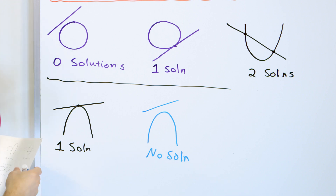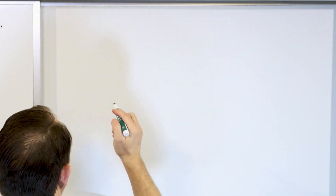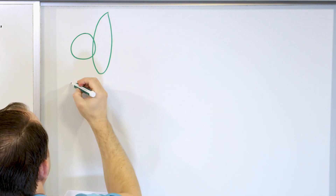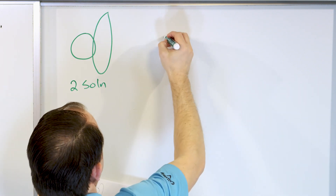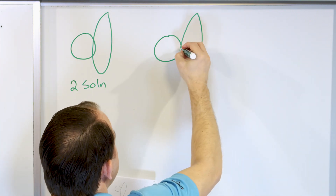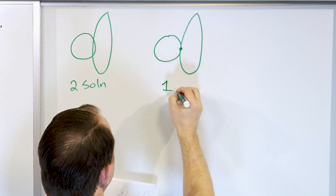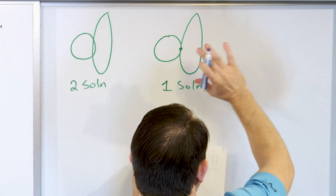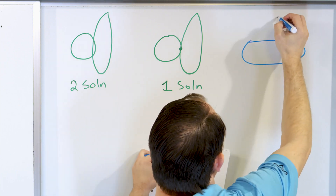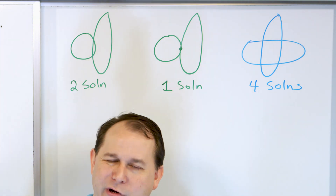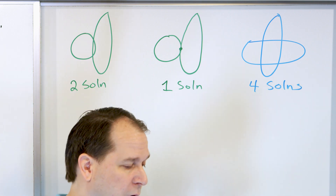Let's draw something more complex. If I have a circle and an ellipse that cuts into it, there are two intersection points — two solutions. What if I move the ellipse over slightly so it only touches the circle at one location? That gives one solution. And what if I have a horizontal ellipse and a vertical ellipse crossing each other? That's how you get four solutions — they intersect in four locations.